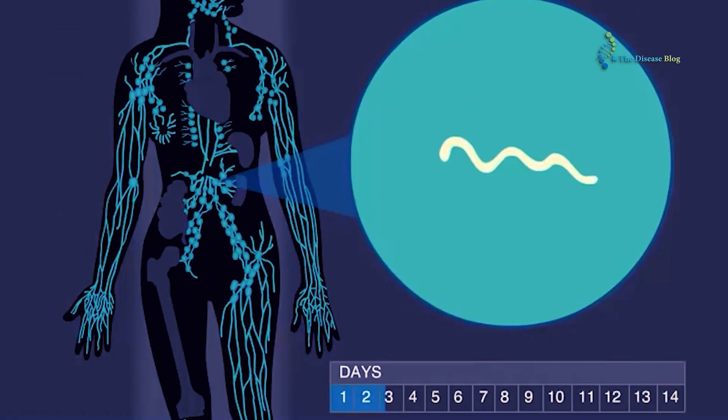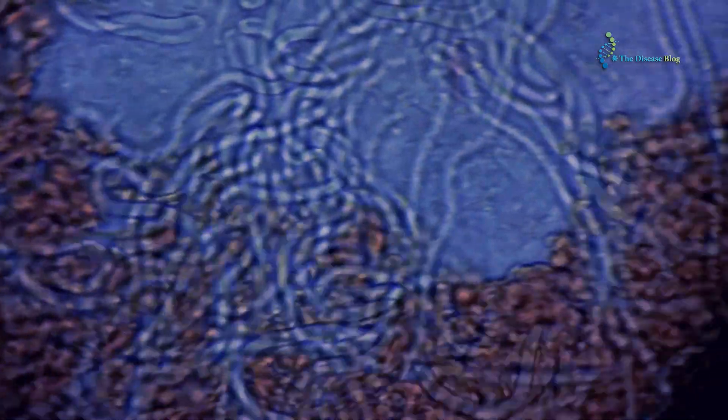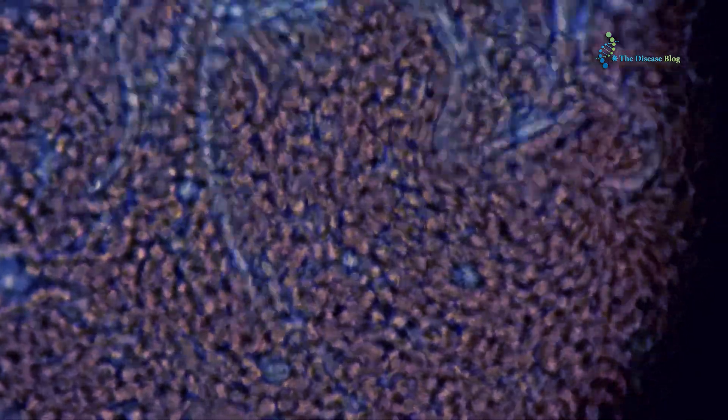In the bloodstream of the host, the mature infective larvae find their way into the lymphatic system, subcutaneous tissues, and serous cavities, where the friendly environment assists them to develop and grow into adult worms. These worms can survive in the lymphatic system for approximately six to eight years.